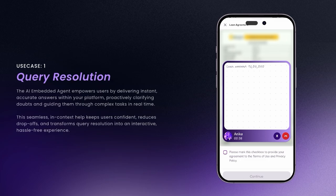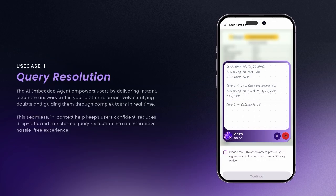Your loan amount is 1 lakh rupees. Processing fee rate is 2% and GST rate is 18%. Step 1: Calculate processing fee. The processing fee is 2% of your loan amount, that is 2,000 rupees. Step 2: Calculate GST. GST is 18% of your processing fee, which equals 360 rupees. Total charges are the processing fee plus GST, which is 2,360 rupees.